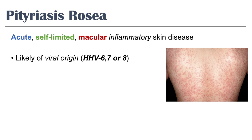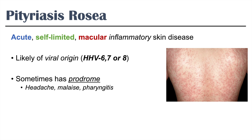This condition sometimes has a prodrome, which means it sometimes has systemic symptoms before its presentation or onset. Some of these can include headache, malaise, and pharyngitis.